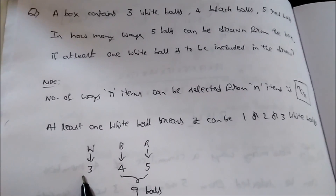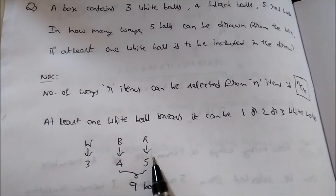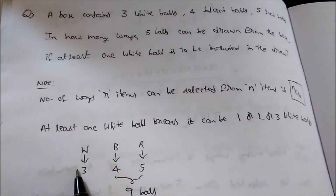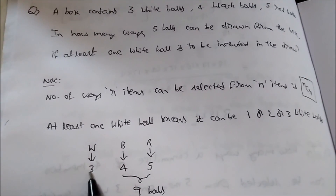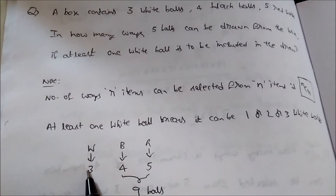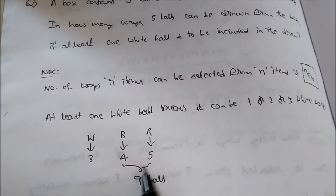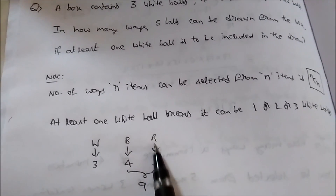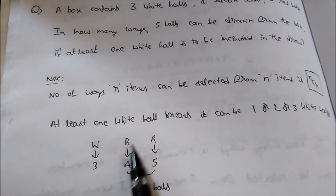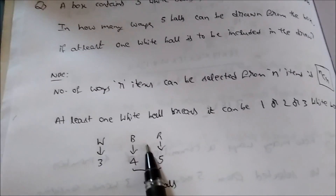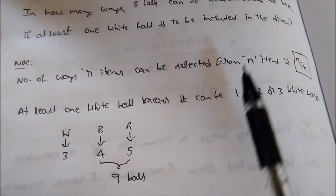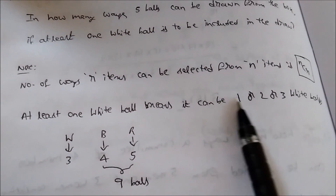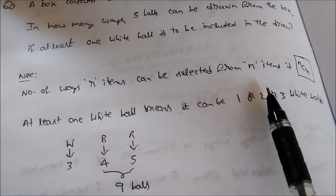White bars: three, black: four, red: five. From white, we need to draw at least one, and the rest of the bars can be drawn from the available nine bars — it can be only black, only red, or a combination of both. We come across three cases: draw one white bar, two white bars, or three white bars.